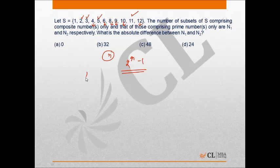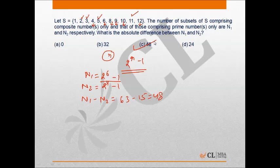So the value of N1 will be 2 raised to power 6 minus 1, and similarly N2 will be 2 raised to power 4 minus 1, because the number of prime numbers in the given set is 4. We have to find the difference between N1 and N2, which will be 63 minus 15, equals 48. Therefore, option C is the correct answer.